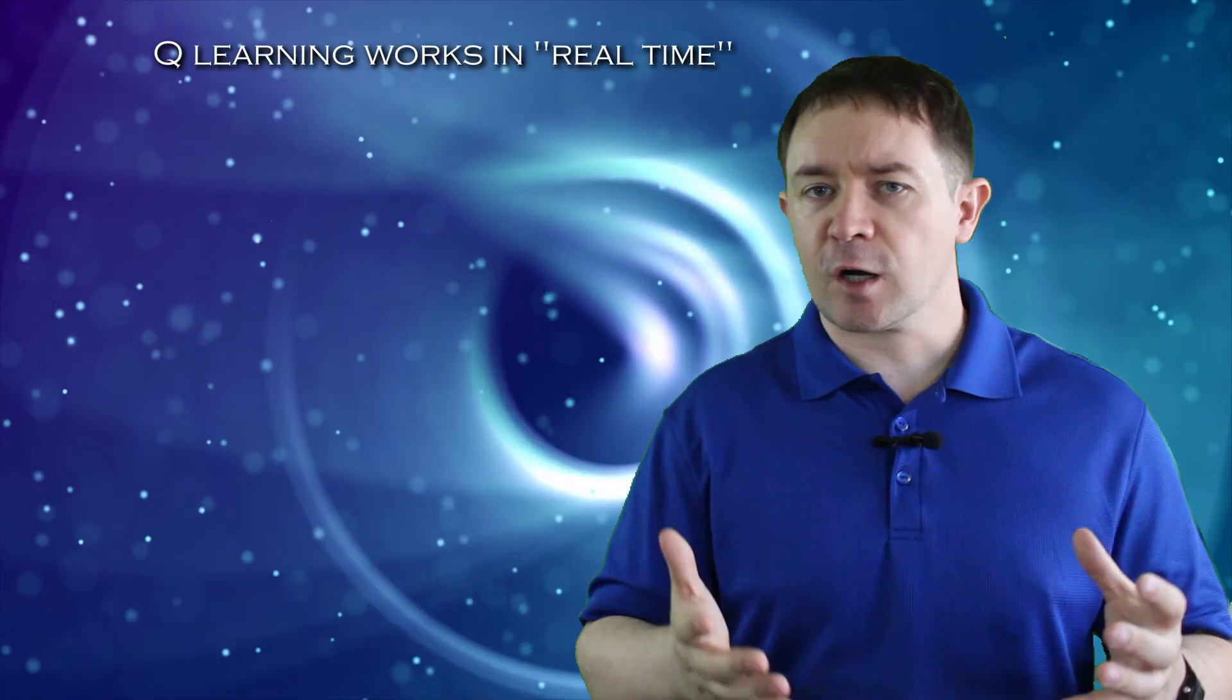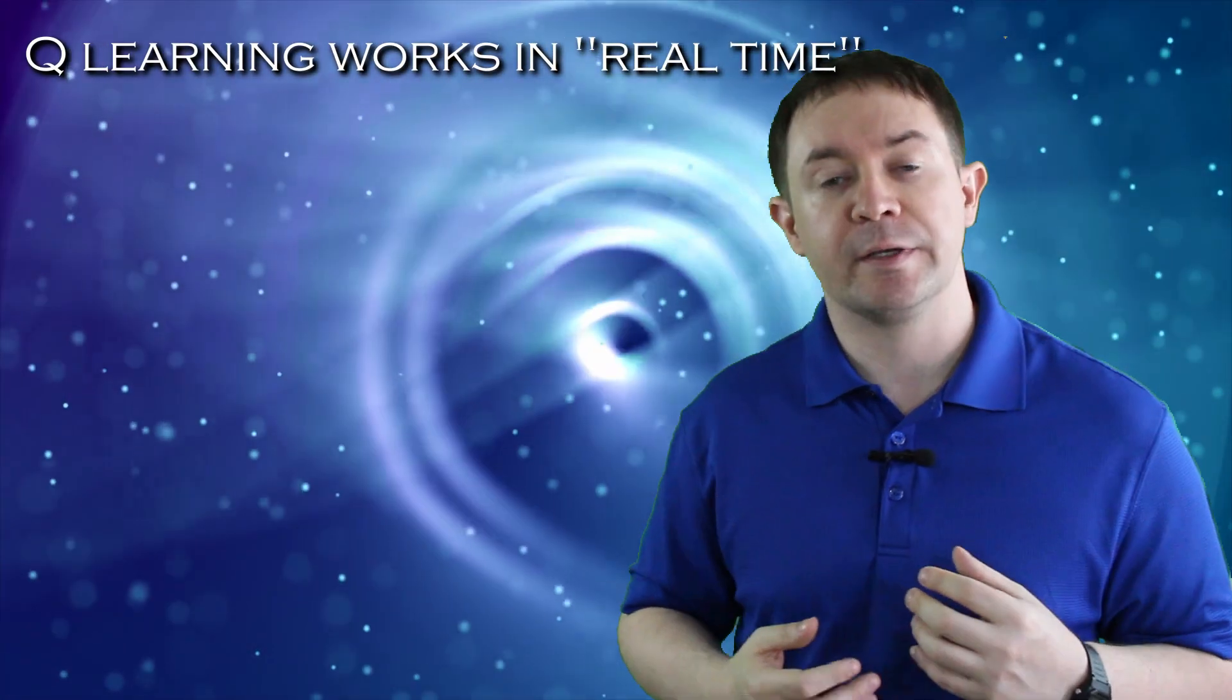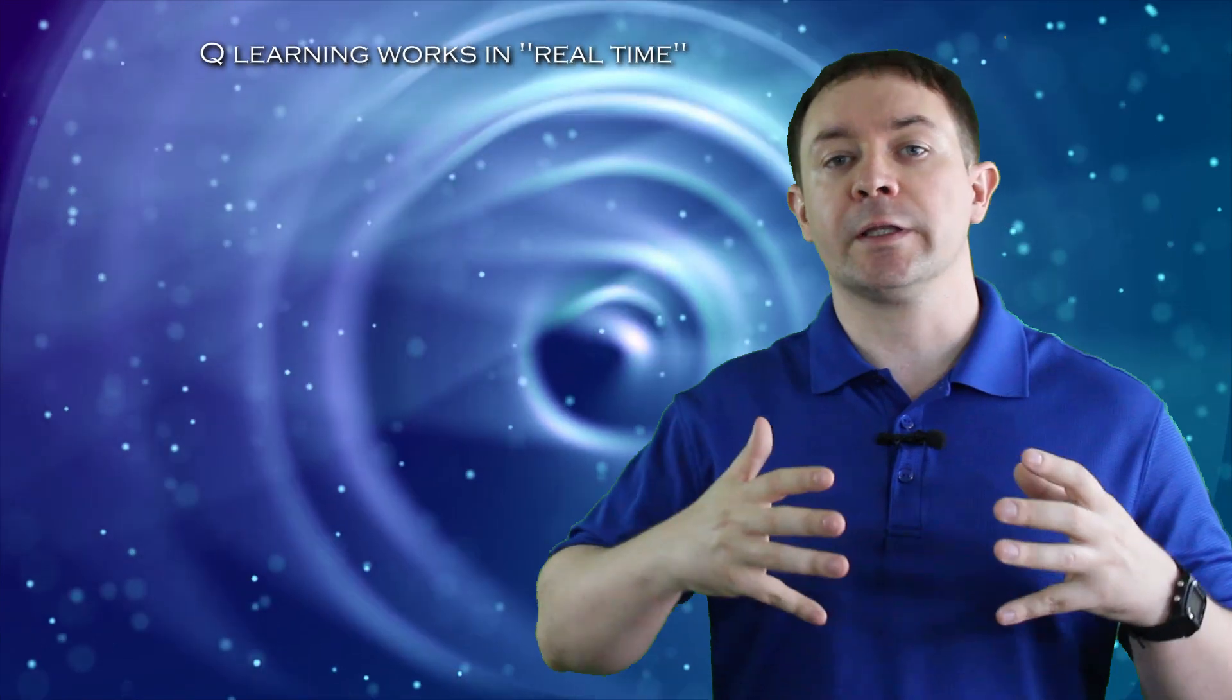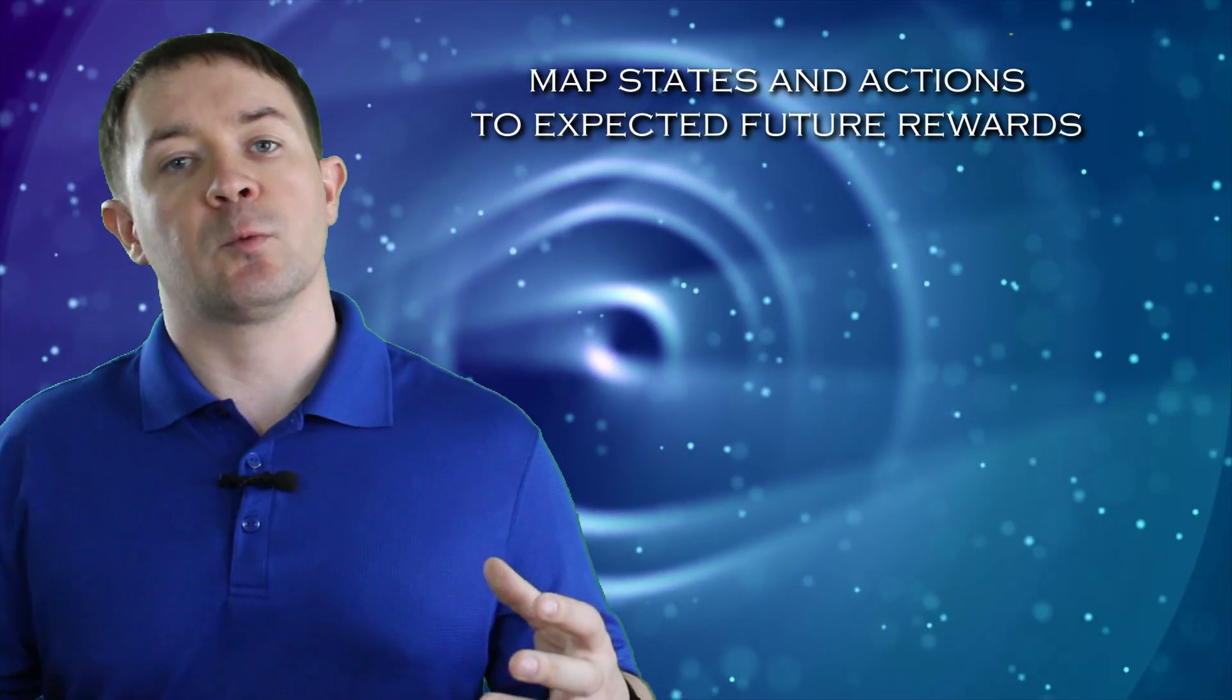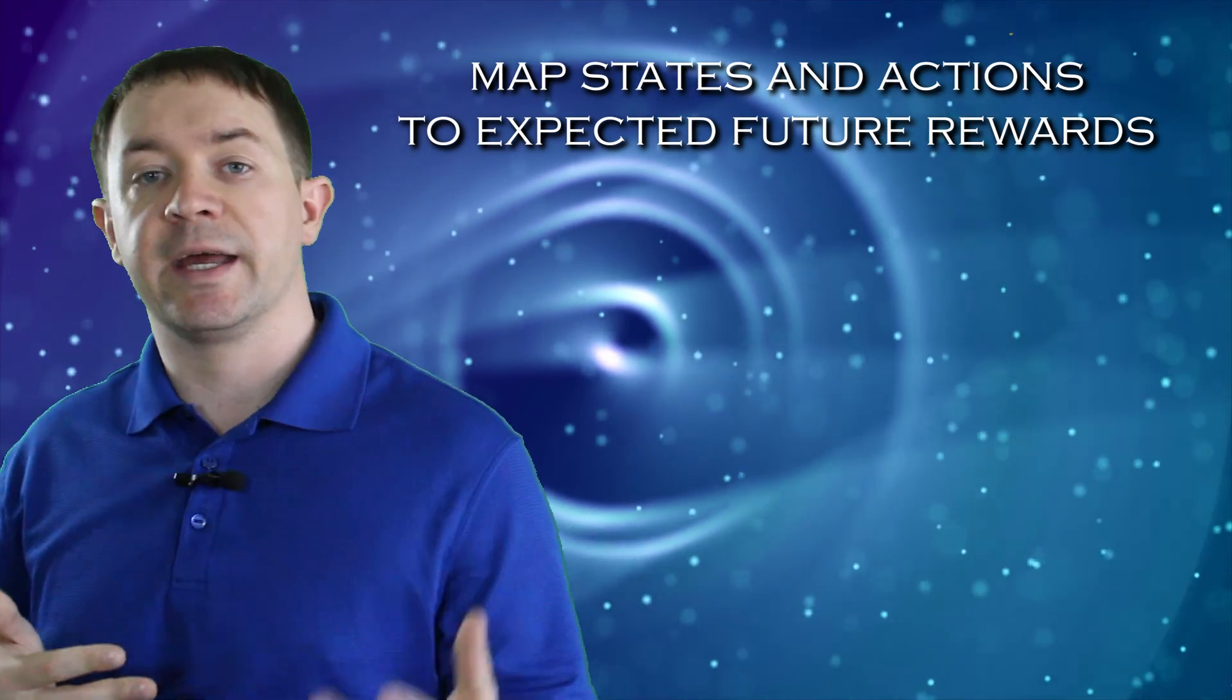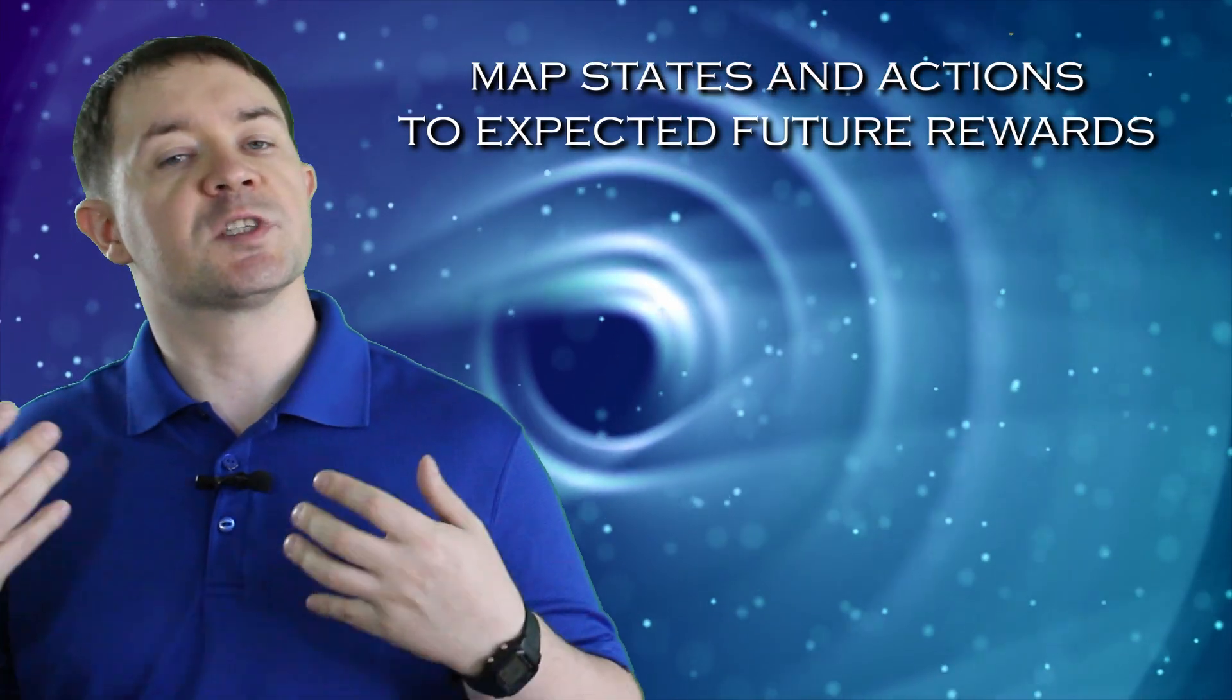Q-learning is a powerful solution because it lets agents learn from the environment in real time and quickly learn novel strategies for mastering the task at hand. Q-learning works by mapping pairs of states and actions to the future rewards the agent expects to receive.